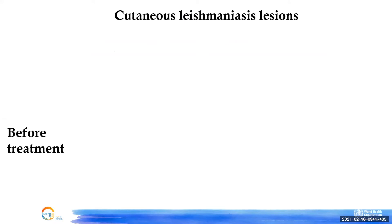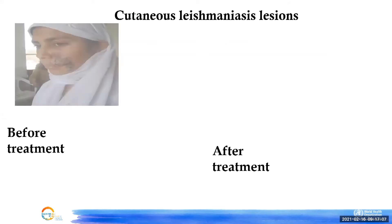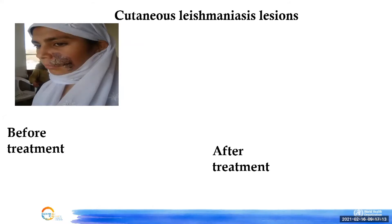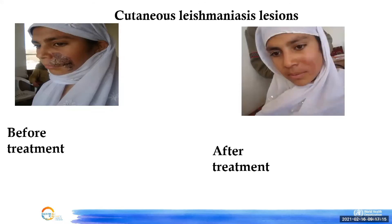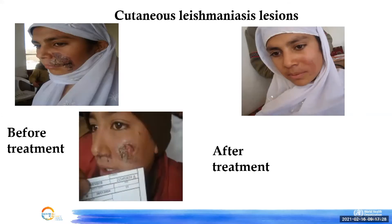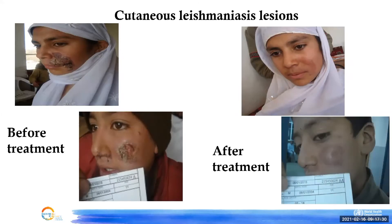Let's see a few cutaneous leishmaniasis lesions. This is an ulcerative lesion on the face of a young girl — even after treatment, this scar will remain throughout her life, causing serious social problems for young women and children. This is a boy with a lesion, and even after treatment, the scar will remain.